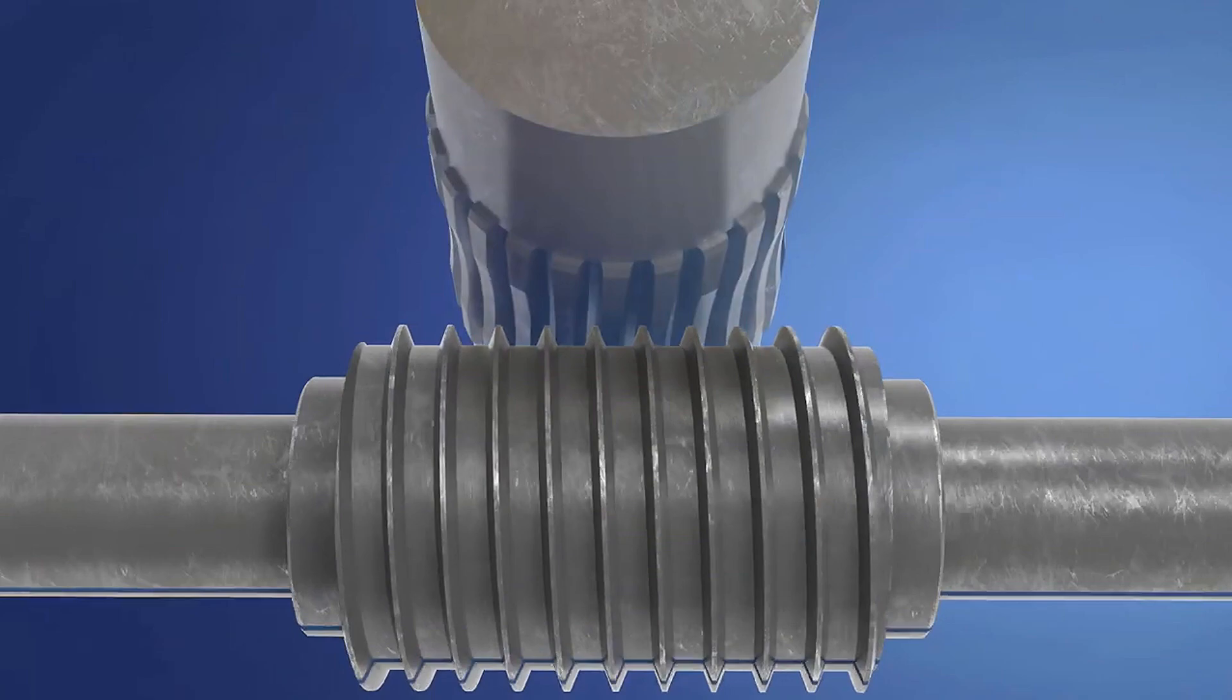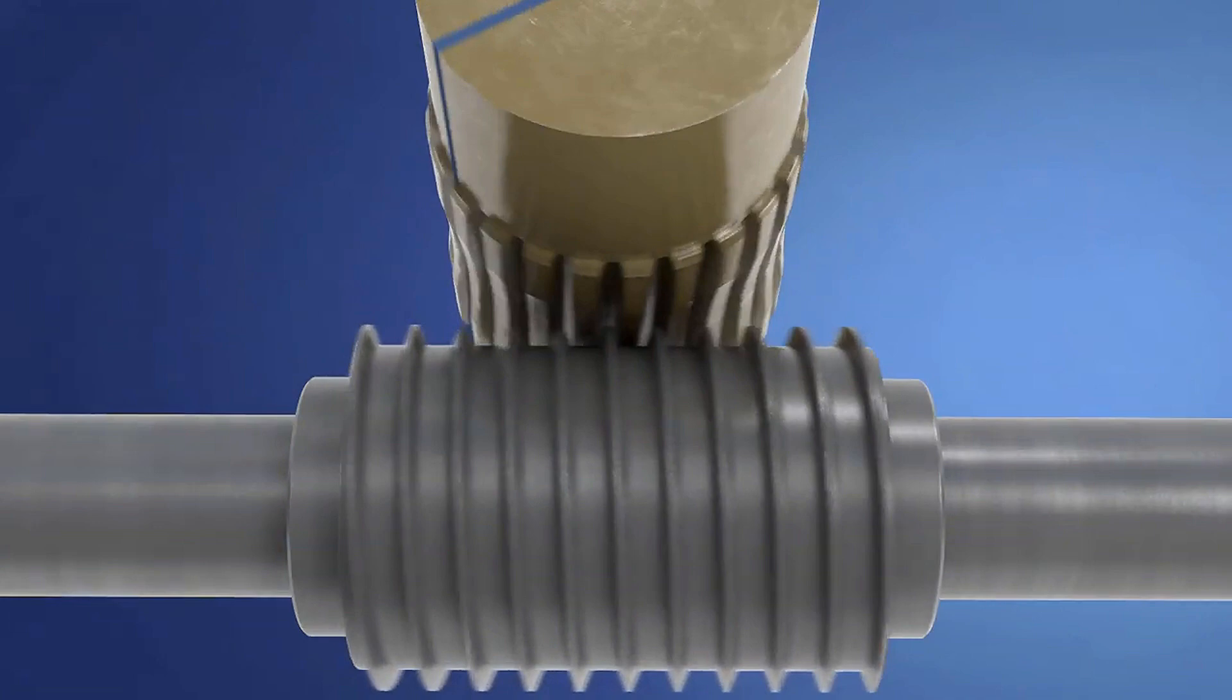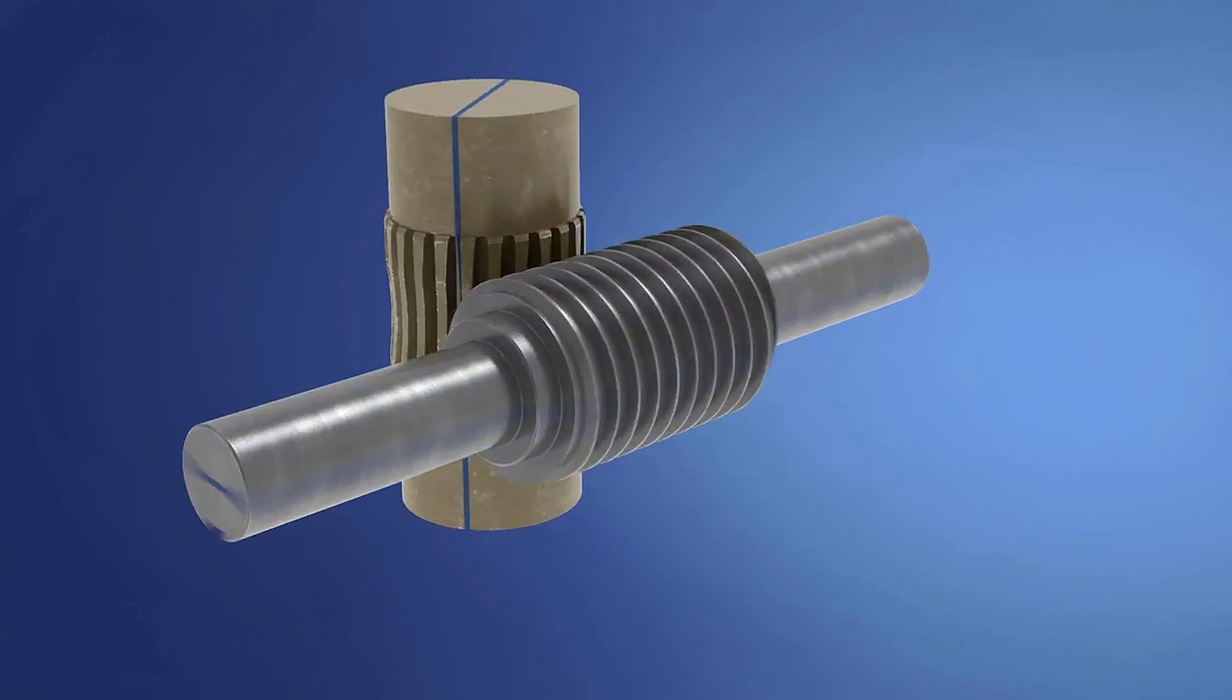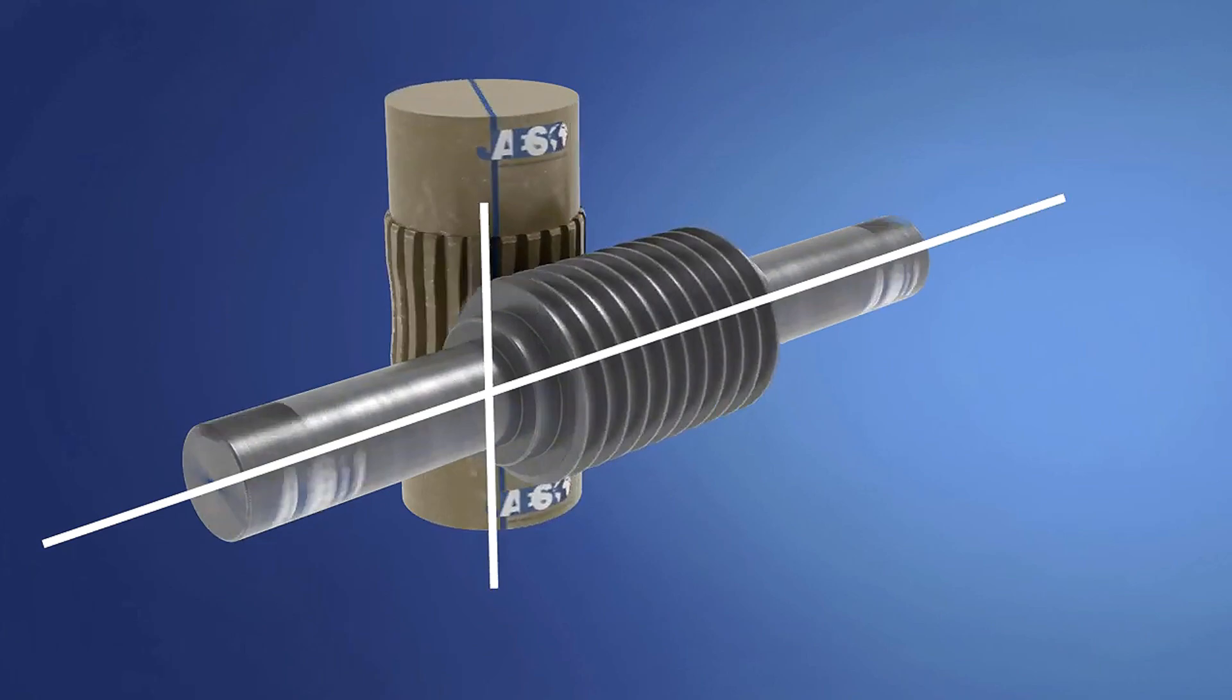The worm screw meshes with a worm gear. These two elements are also called the worm screw and worm wheel. This arrangement can reduce rotational speed or transmit higher torque. Let us remember that the torque is the tendency of a force to cause or change the rotational motion of a body about its axis.